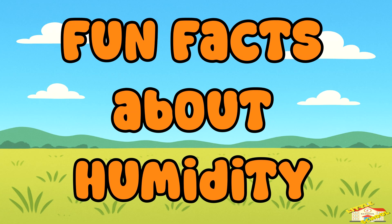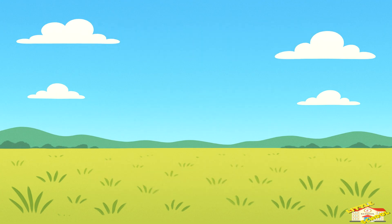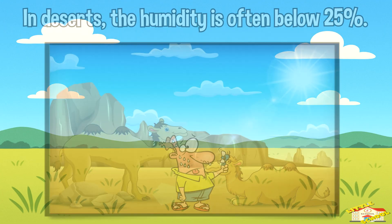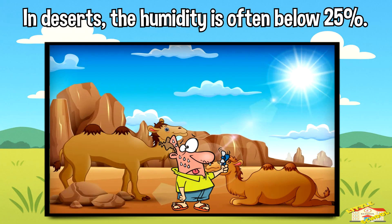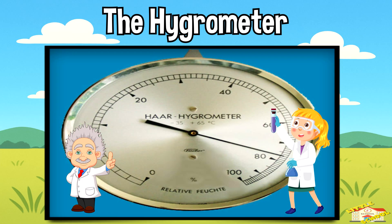Now here are some fun facts about humidity. In deserts, humidity is often below 25%, making the air super dry. In rainforests, humidity is usually about 80%, which is why it feels hot, wet, and sticky. Scientists use a tool called a hygrometer to measure humidity.